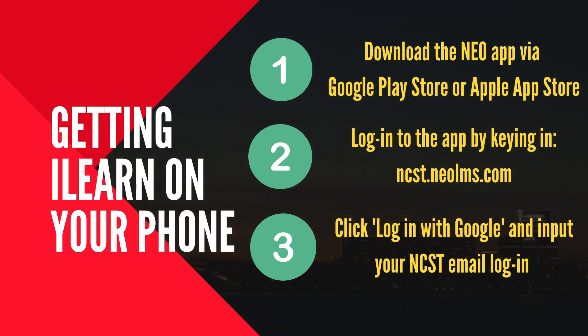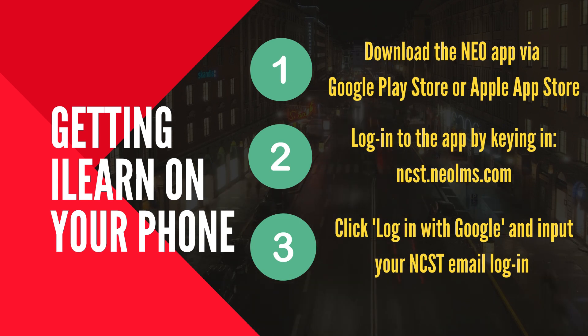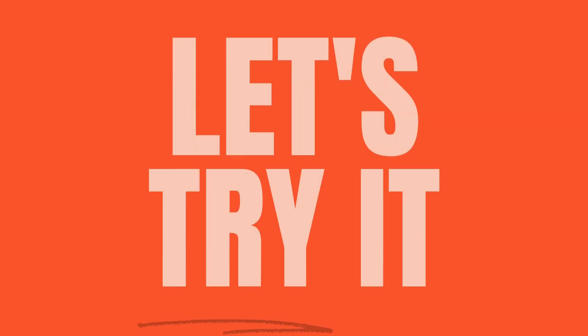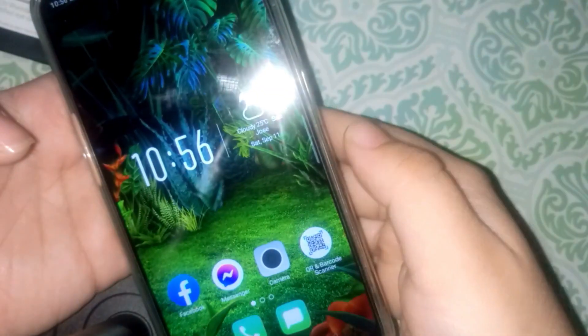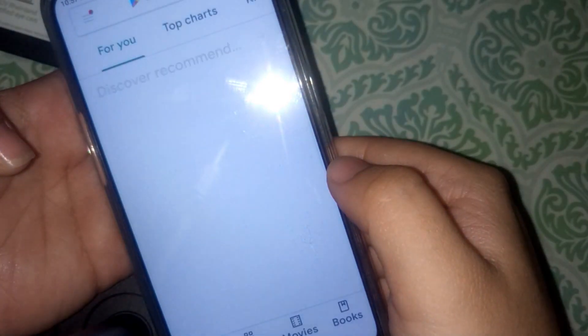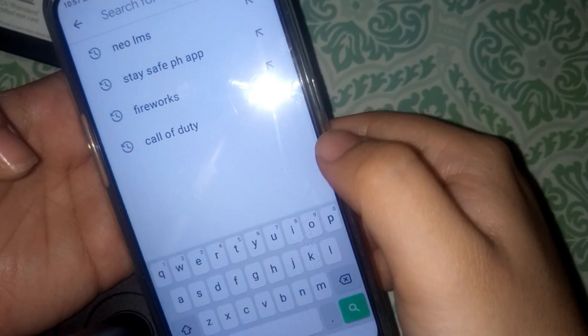Getting started with iLearn on your phone is simple. In your phone, through Google Play Store or Apple App Store, search for the Neo LMS app and install it on your phone.